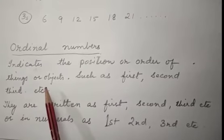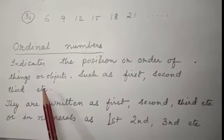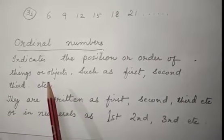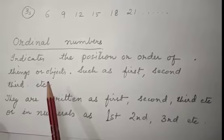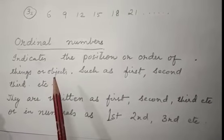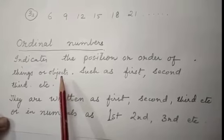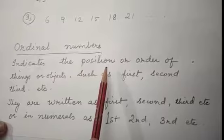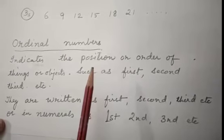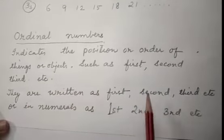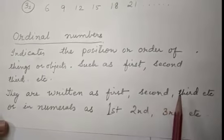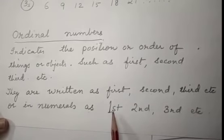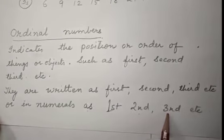Ordinal numbers when you go for running race, they won't say that first one child, two child, three child. We give the prizes first prize, second prize, third prize or first this child has come, second this child has come. So like that we speak. Same thing that ordinal numbers say that it is a position or the things where the objects are kept. They are written as first, second, third, etc. Or in numerals we can say it has a first, second, third, etc.